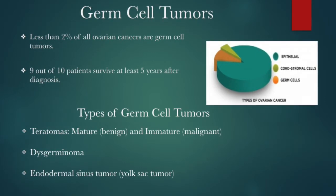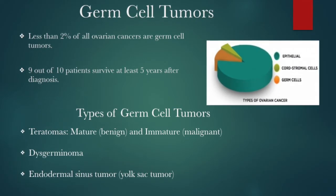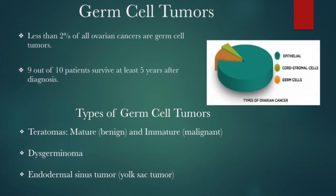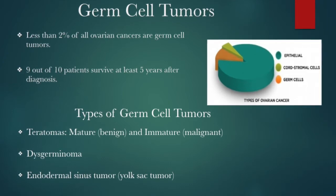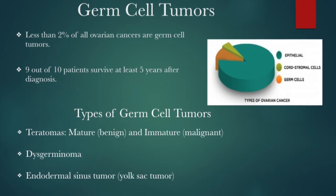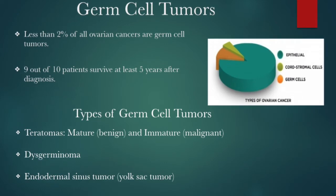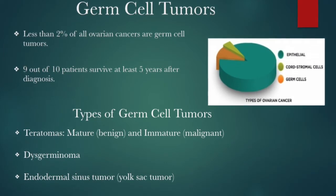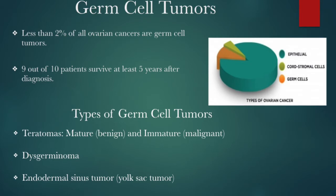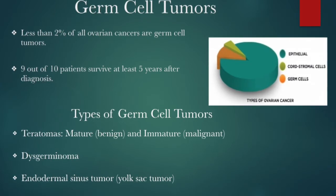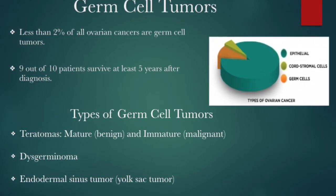Teratomas microscopically look like the three layers of a developing embryo. This germ cell tumor has two forms: one that is benign is called a mature teratoma, and one that is malignant is called an immature teratoma. The immature teratoma is a rare cancer that contains cells that look like embryonic or fetal tissue, and these typically occur in younger women under the age of 18. Dysgerminoma is rare but the most common of the germ cell cancers. These tumors grow and spread very slowly and more than 75% of women who have them are cured with surgical removal of the tumor alone.